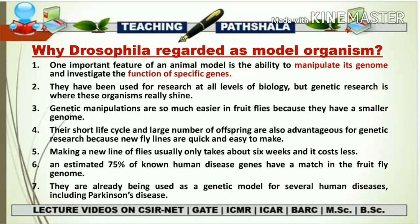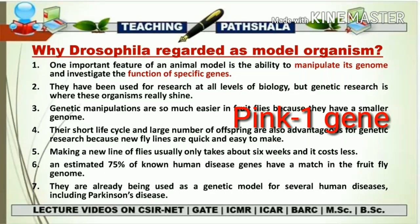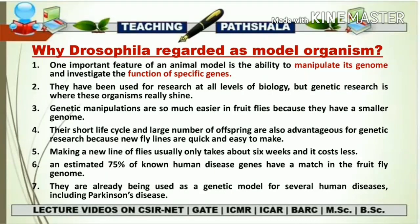Drosophila is already being used as a genetic model for several human diseases, including Parkinson's disease. Scientists know that mutation in the Pink1 gene is responsible for Parkinson's disease in humans, but initially they didn't know what the gene actually does. Researchers need to know the gene's normal function before investigating how the mutation leads to Parkinson's disease and how to treat it. In an animal model, researchers can study gene function by manipulating the relevant gene and observing the resulting changes in physiological processes or behavior.